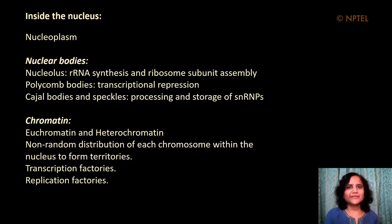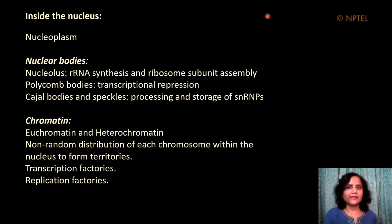What's inside the nucleus? Of course there is DNA organized in the form of chromatin, but also various other nuclear bodies. These include the nucleolus — a large, dense, darkly staining body that is the site of rRNA synthesis and ribosomal subunit assembly. There are also polycomb bodies which are sites of transcriptional repression, and Cajal bodies and speckles where the processing and storage of snRNPs occurs. snRNPs stands for small nuclear ribonucleoproteins.